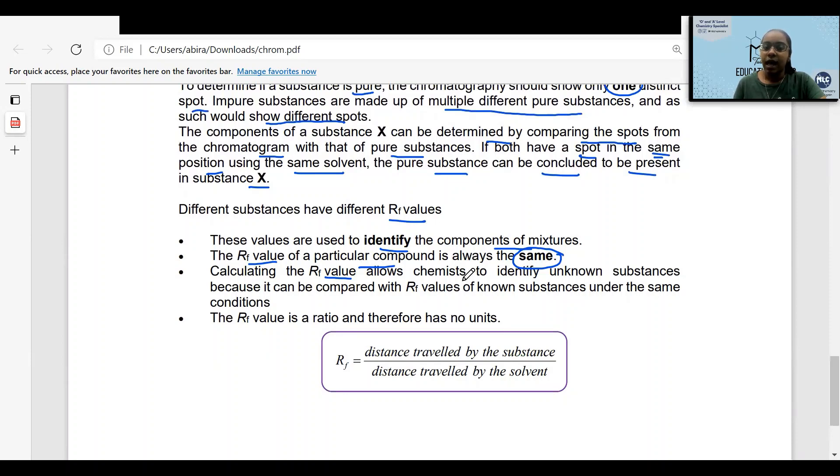Calculating the RF value allows chemists to identify unknown substances because it can be compared with RF values of known substances under the same conditions.